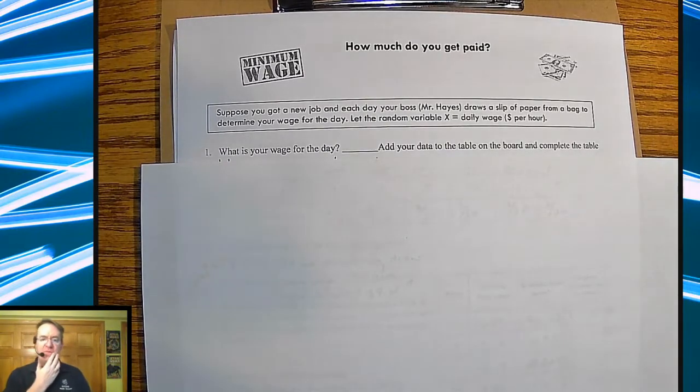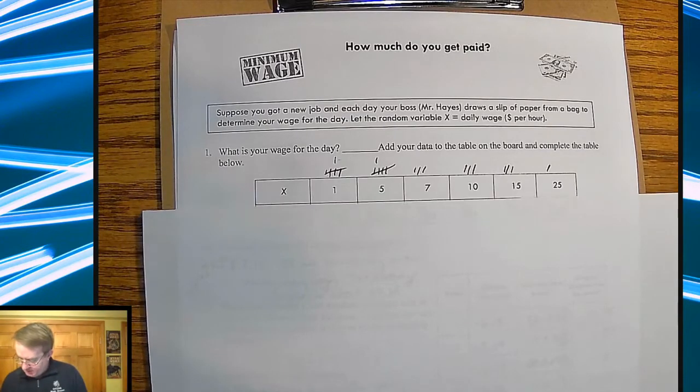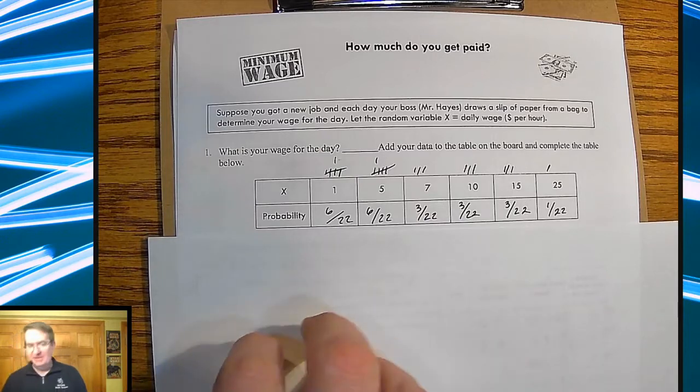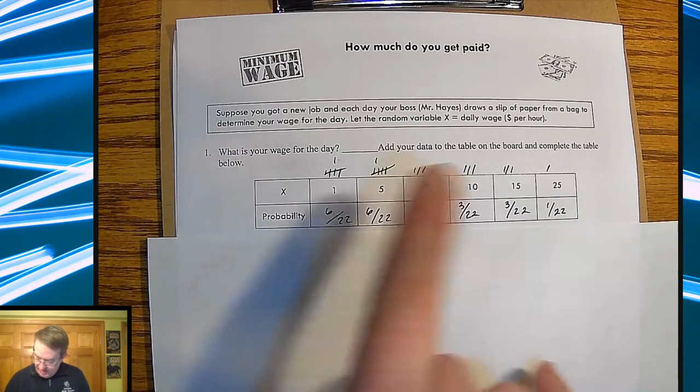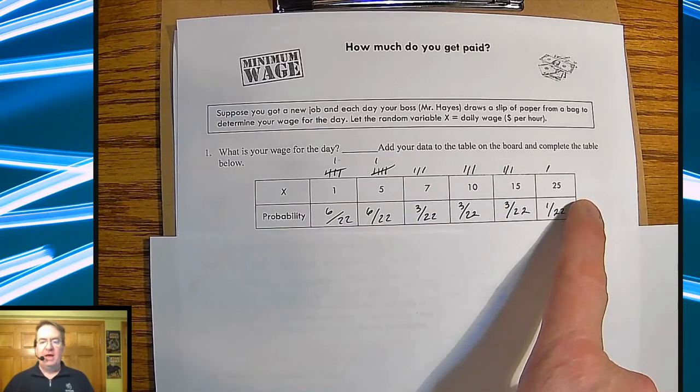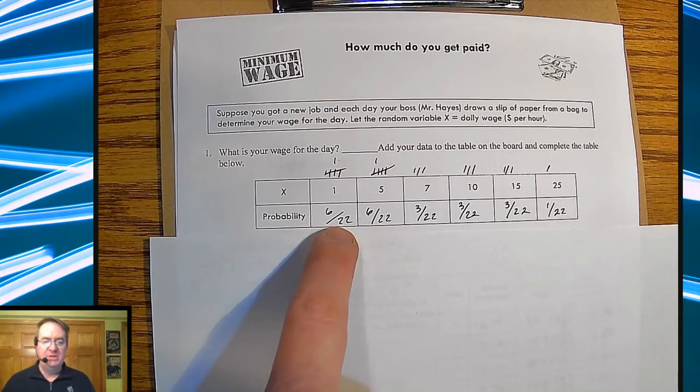So we come up with this mythical job, and what ends up happening is you randomly give students numbers, 1 through 25. Have them write them down because you're going to end up actually using this for a number of days. Invariably, there's not a lot of high-paying jobs, but there's a lot of lower-paying jobs.